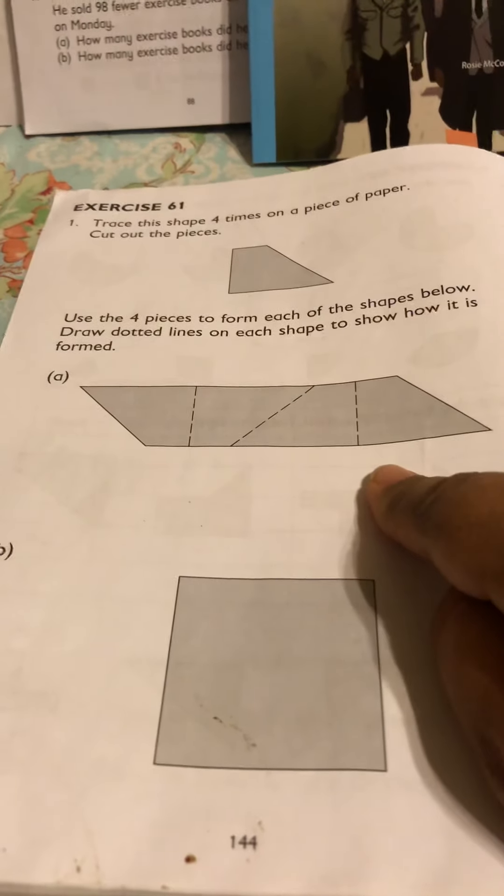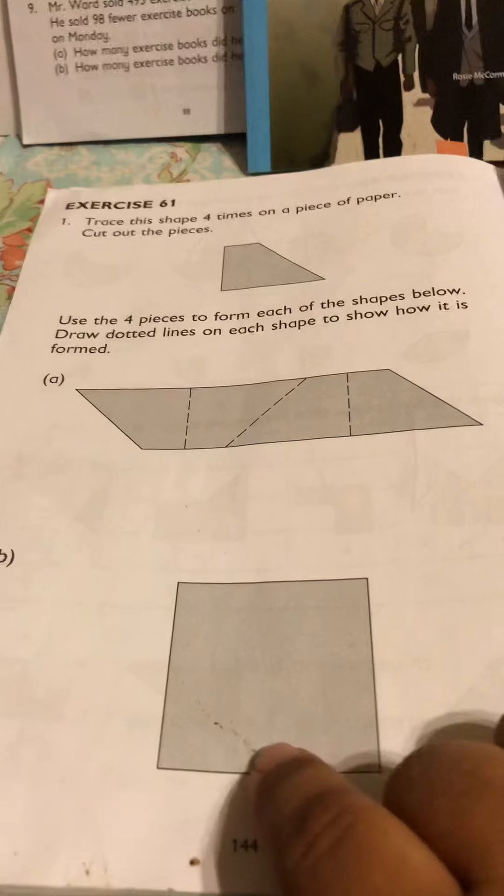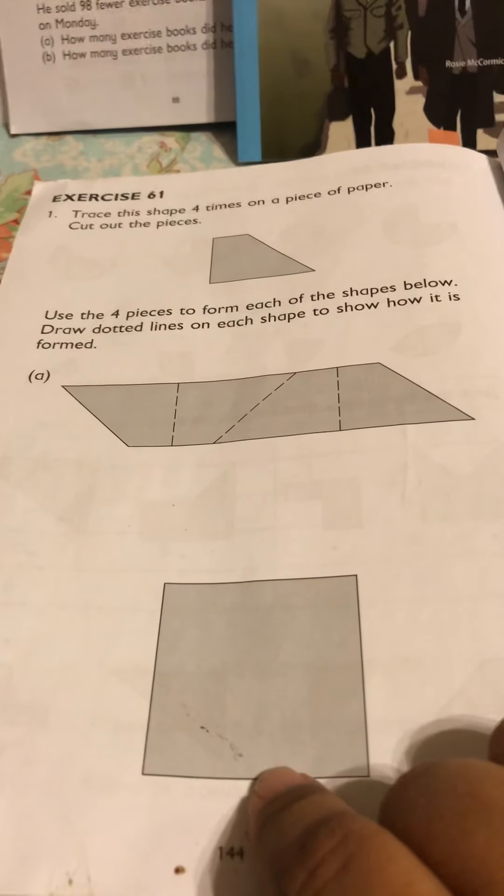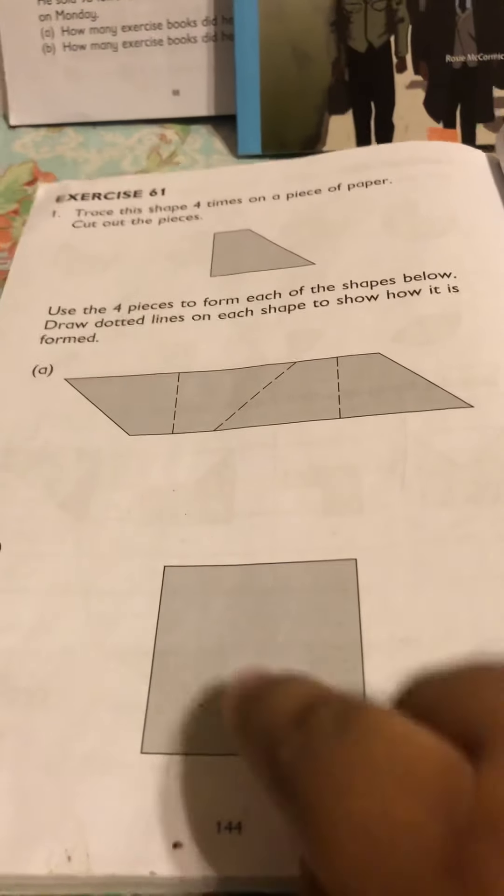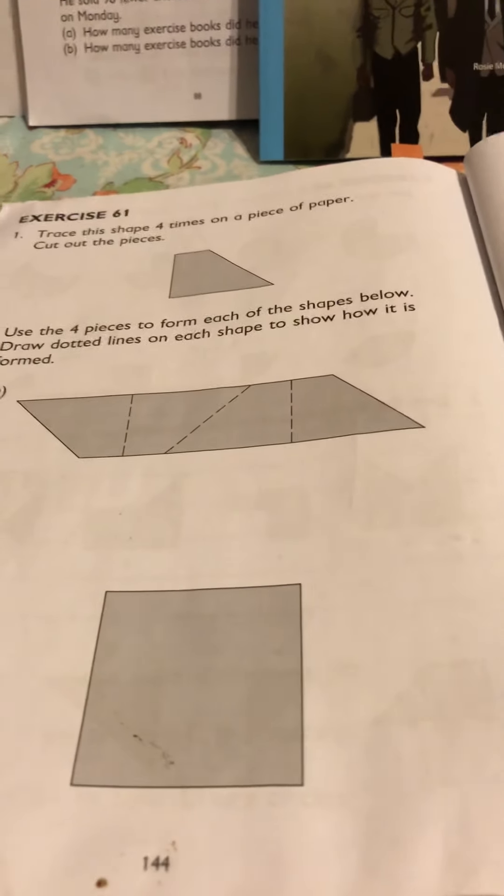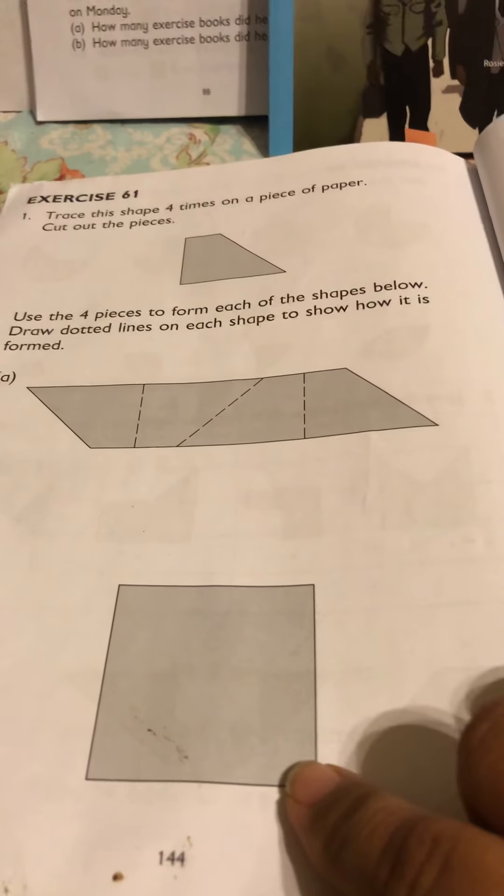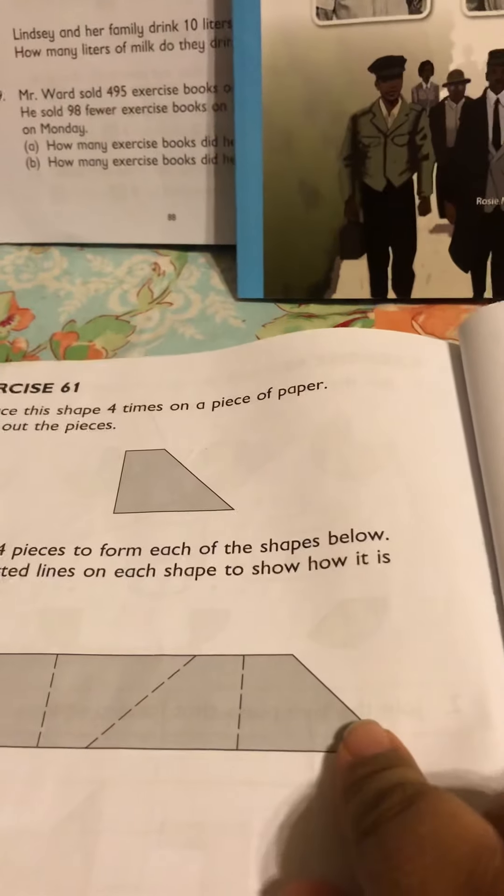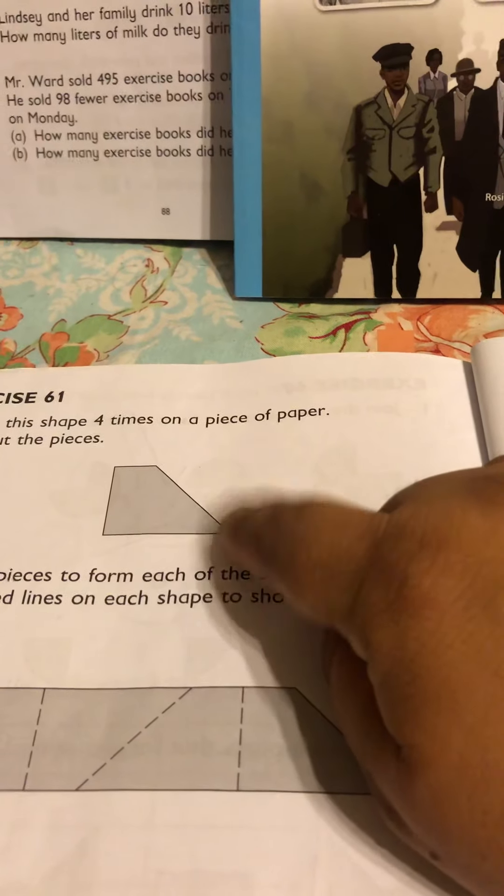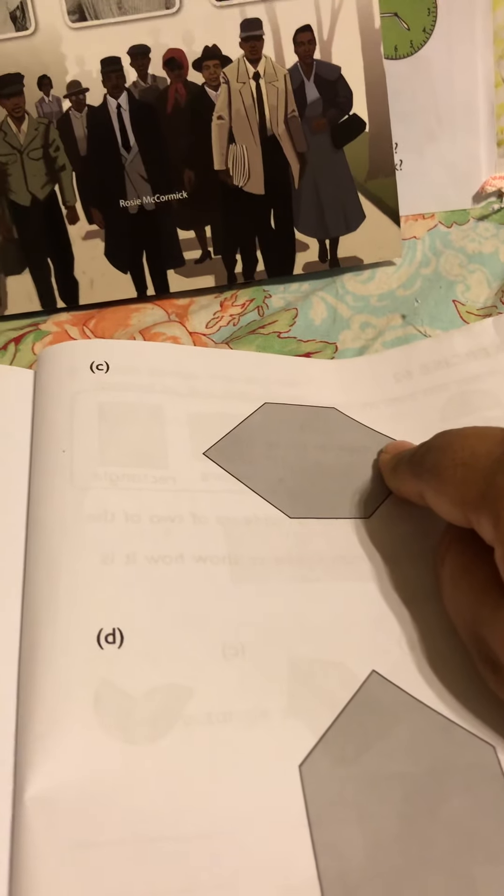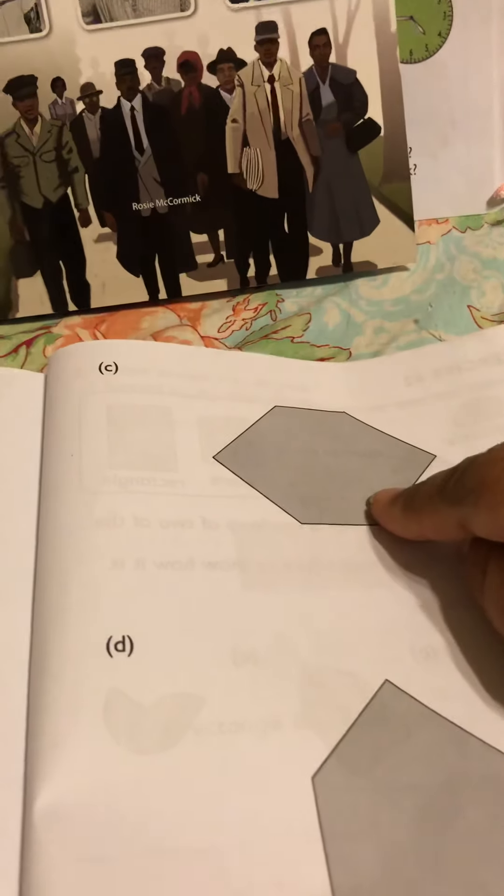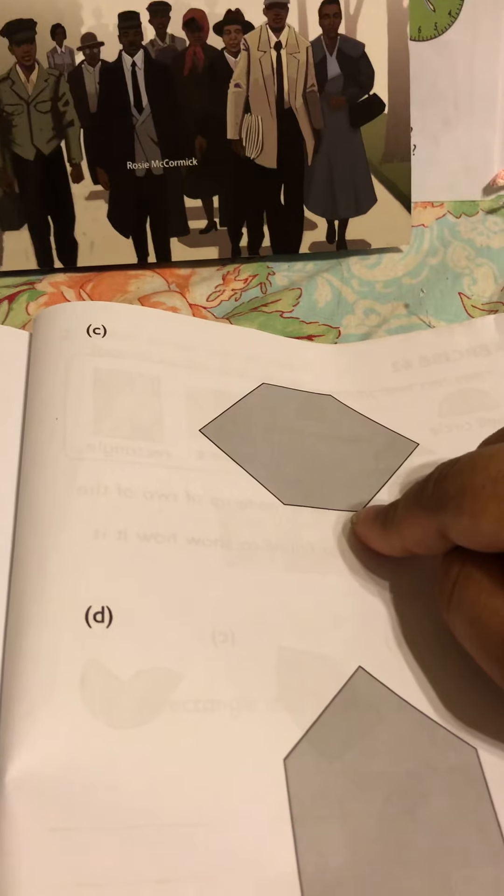And then you're going to use the same shapes to fit in this square like a puzzle. So you will flip it around, twist it around until you find the correct position to make this shape. So it's a puzzle. Okay, so we're taking our four shapes that look just like this and we're going to take them and use them for this shape and then flip them, turn them around, twist them until you're able to complete the puzzle using this shape four times.